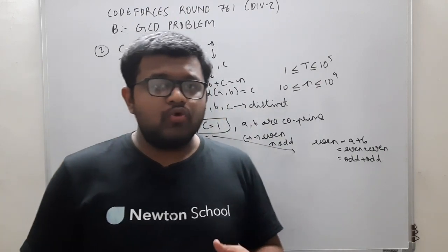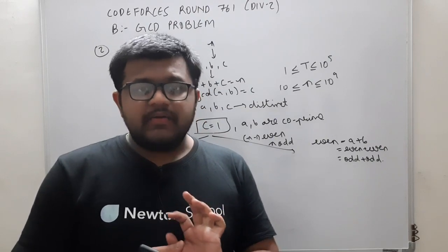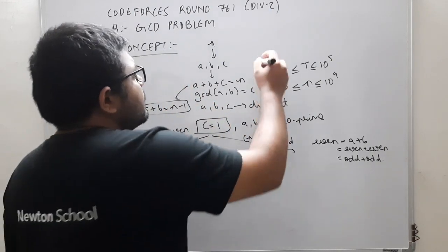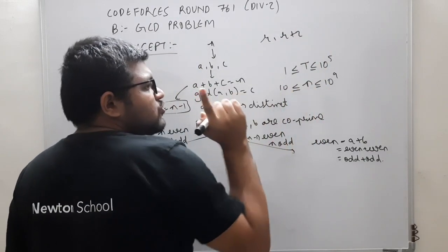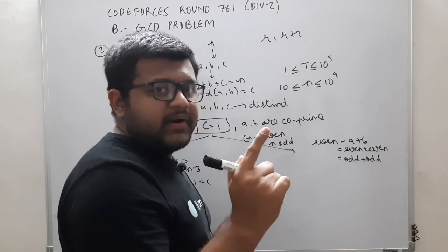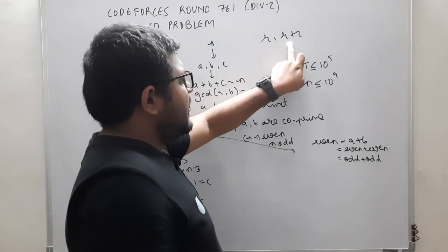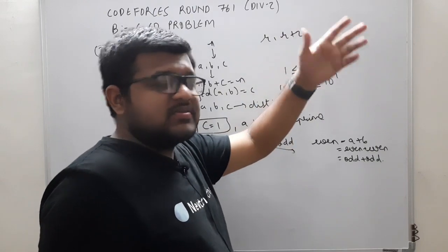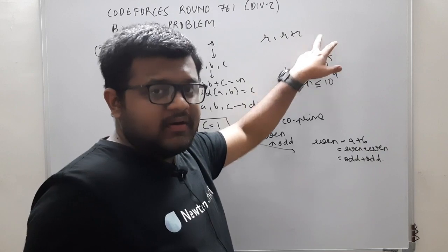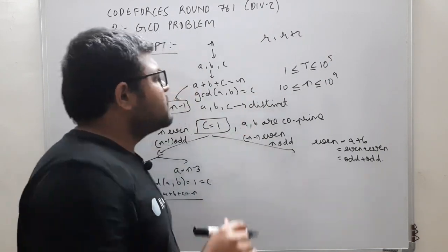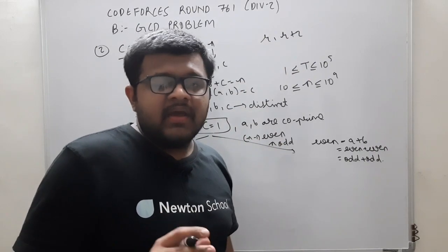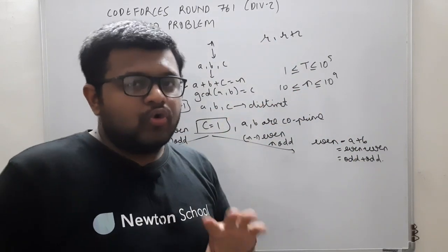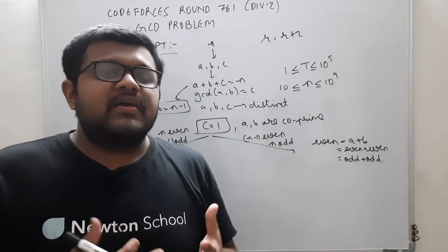Understand this: if I take two odd numbers whose difference is 2, say r and r plus 2, their GCD can only be 1 or 2. Since r is odd and r plus 2 is also odd, 2 cannot divide either of them. So their GCD must be 1. More generally, if a divisor d divides r, then d divides r plus d, not r plus 2 unless d equals 1 or 2. Since both are odd, 2 is not a divisor, so GCD = 1.